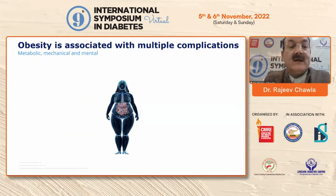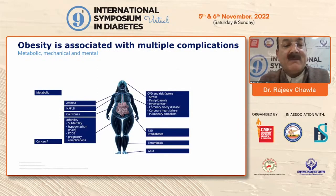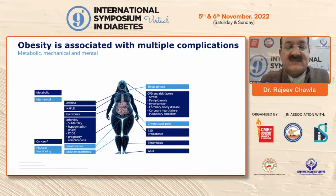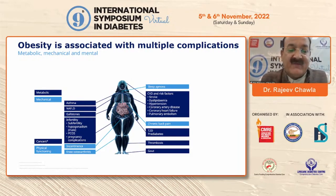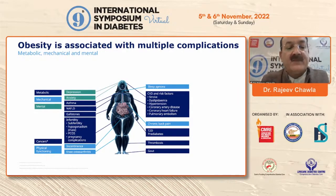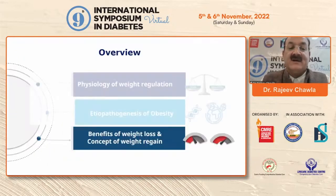We know that with obesity there are going to be multiple complications — metabolic, mechanical, and mental. Metabolic could be in the form of asthma, NAFLD, gallstones, PCOD, subsequent pregnancy complications, and high risk of developing cancers. Mechanical effects include OSA, osteoarthritis, inability to walk, and chronic back pain, which makes patients almost completely inactive. Mental results of obesity are also catastrophic, in the form of depression and anxiety which come as a result of obesity.